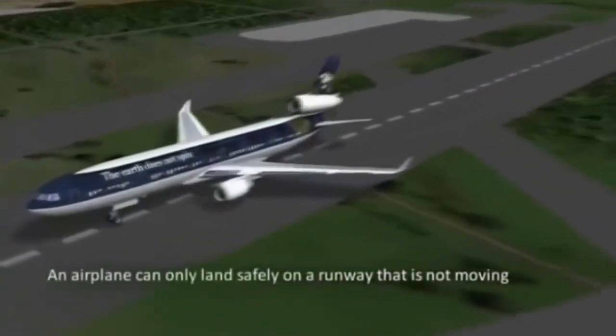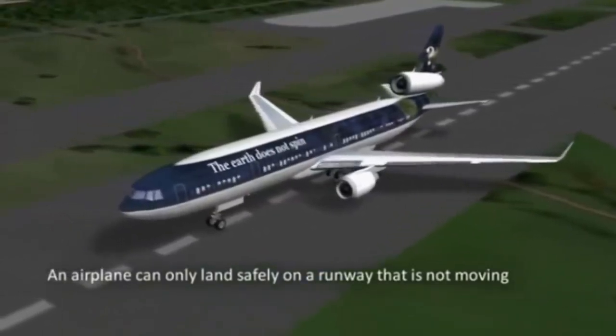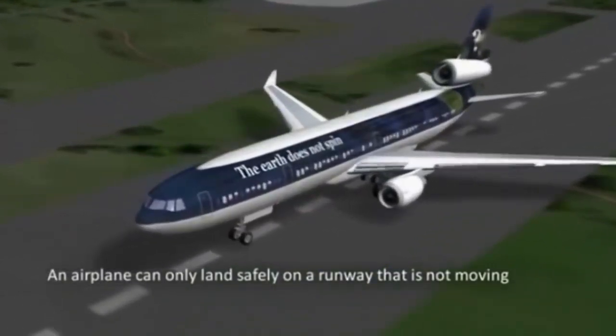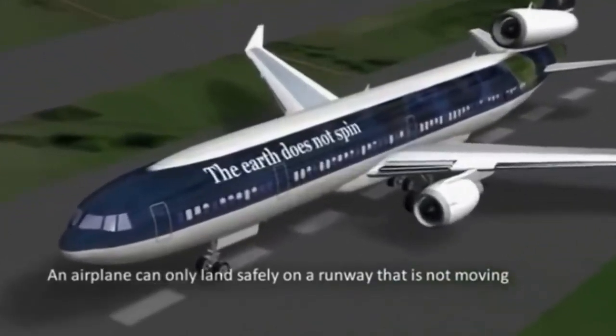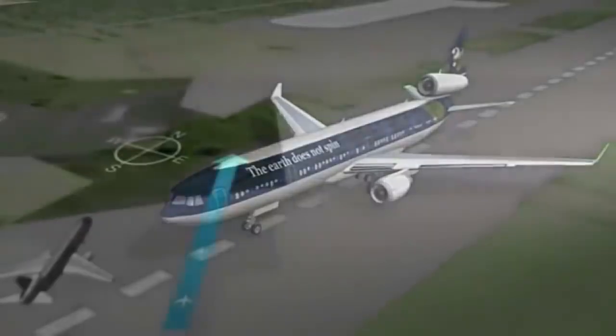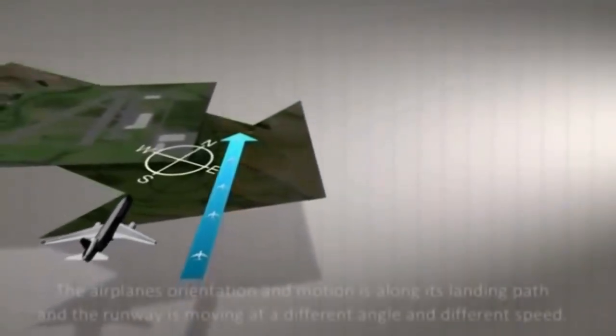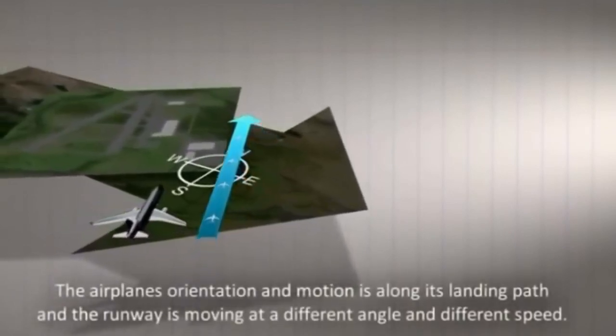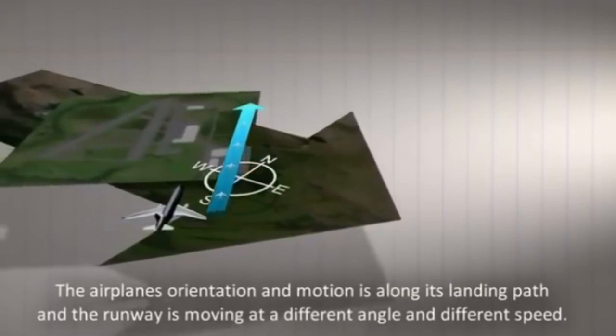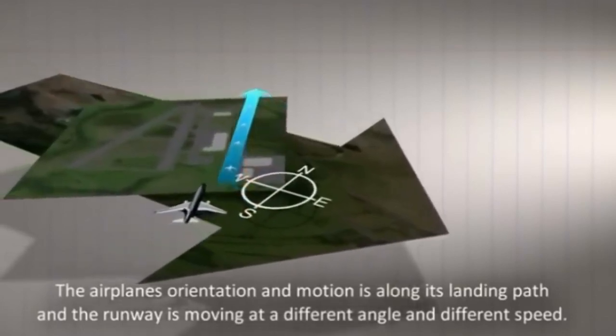Indeed, if there was a Coriolis Effect, it would be nearly impossible to land a plane on a runway. A runway that runs north and south would be careening at approximately 1,000 miles per hour across the path of the plane, which would make it impossible to line up the plane for a landing.